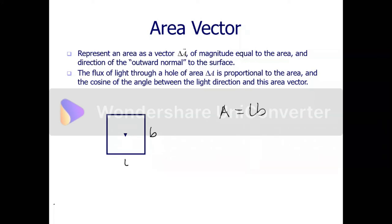The issue of the outward normal will be understood better as we proceed. For now, understand that the magnitude of this area vector is just equal to the area. The direction is normal — perpendicular to the surface and outward.